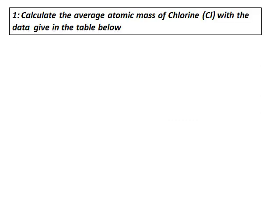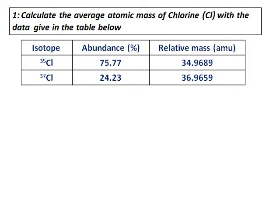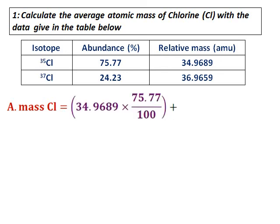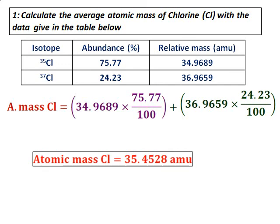Calculate the average atomic mass of chlorine with the data given in the table. The percentage abundance of the two isotopes — chlorine-35 and chlorine-37 — and the relative mass are given. The atomic mass of chlorine equals the relative mass multiplied by the percentage abundance divided by 100, then summed. Calculating this gives the atomic mass of chlorine as 35.4528.